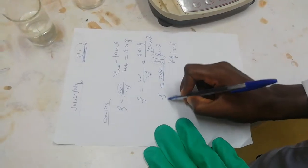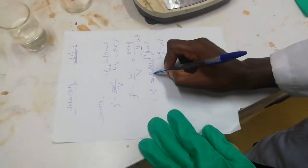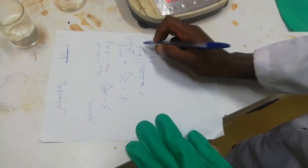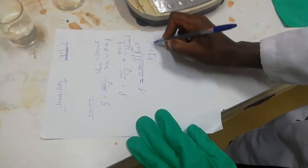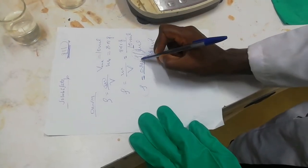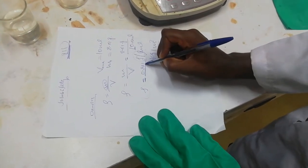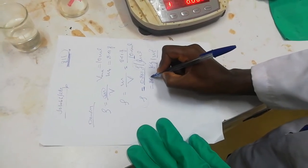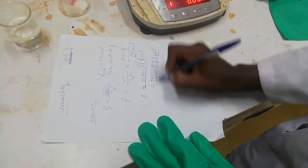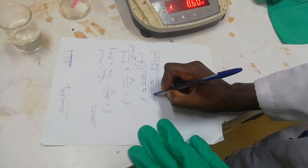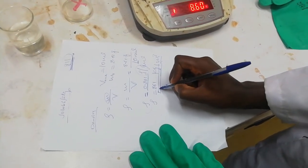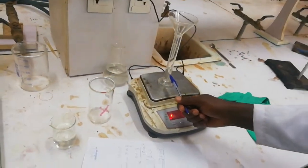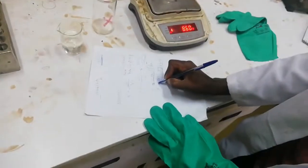Our unknown liquid has a density of 0.861 grams per milliliter. To convert into the SI unit, kilogram per meter cubed, we multiply by 1,000. So we get 861 kilograms per meter cubed. This is our experimental density for the unknown substance.